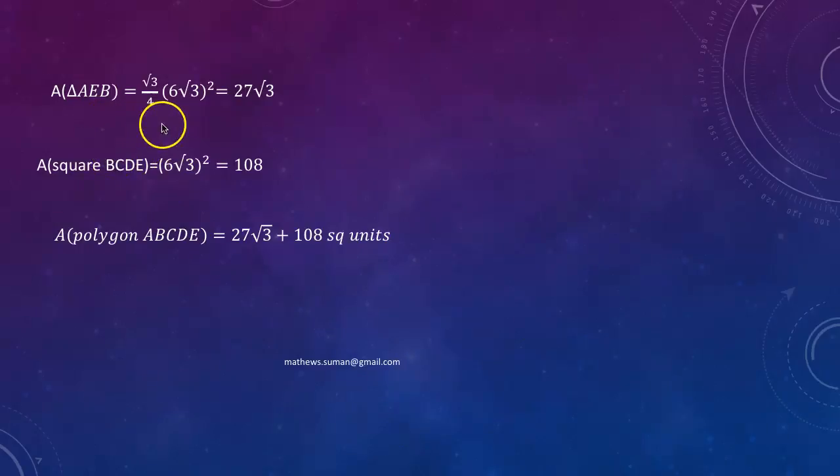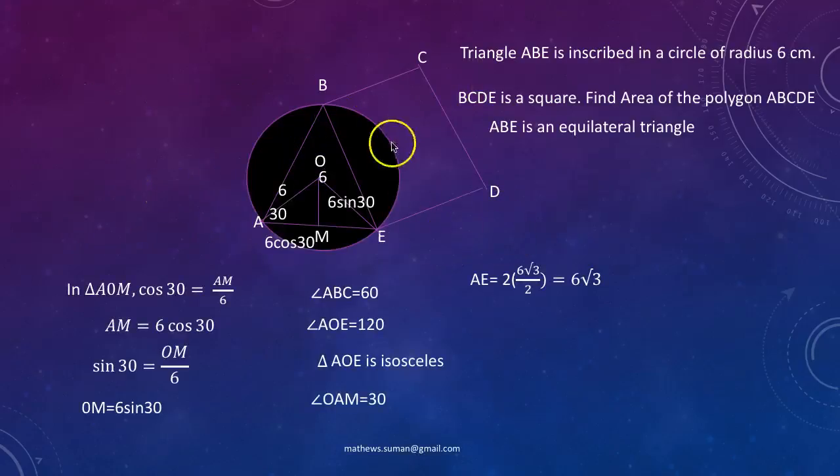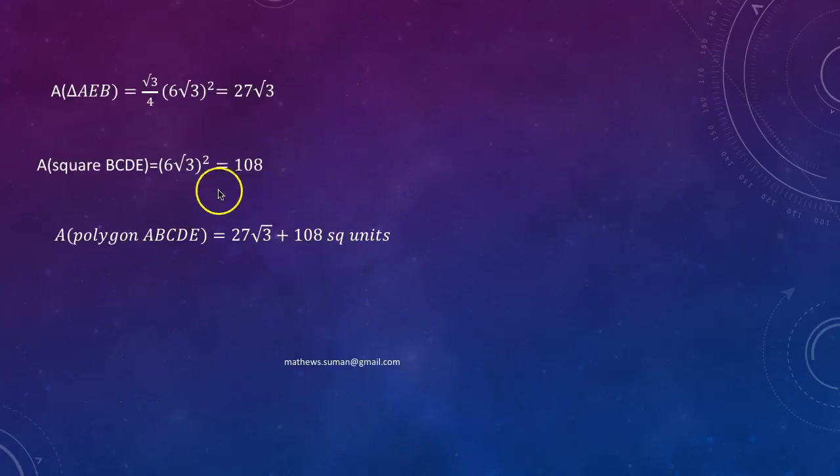Triangle AEB being an isosceles triangle, area of an isosceles triangle is root 3 by 4 into A squared. So this is root 3 by 4 into 6 root 3 squared which is 27 root 3. Area of the square BCDE is 6 root 3 squared which is 108. Adding the two areas, area of the polygon would be 27 root 3 plus 108 square units.